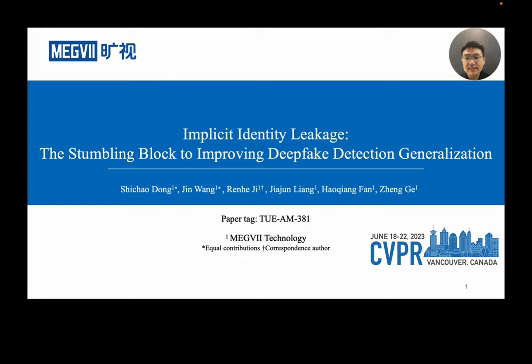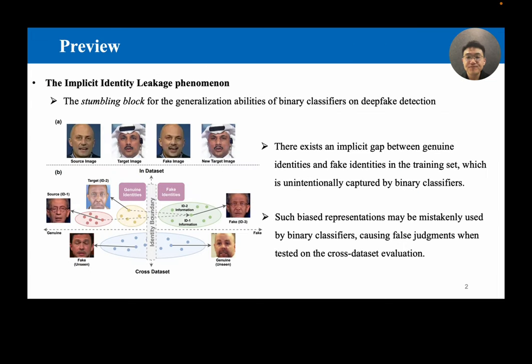Hello everyone, welcome to our presentation of the paper Implicit Identity Leakage, The Stumbling Block to Improving DeepFake Detection Generalization. Let's start with a quick preview first. In this paper, we analyzed the generalization abilities of binary classifiers for the task of deepfake detection. We found that the stumbling block to their generalization is caused by the implicit identity leakage phenomenon, namely the mistakenly learned ID representation on images may cause false judgments when tested on the cross-dataset evaluation.